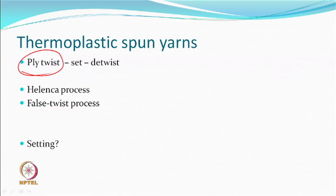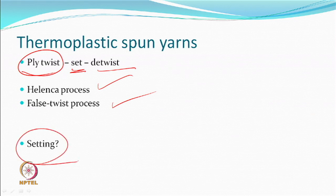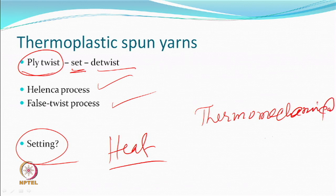If they are thermoplastic fibres, you give a ply twist, then set, and then detwist — this is the same type of process we understood, otherwise known as the helenka process or a false twist process. One can employ these processes — helenka being a batch process and false twist being a continuous process. The setting will be done by heat, and therefore this process should be considered thermomechanical texturing.